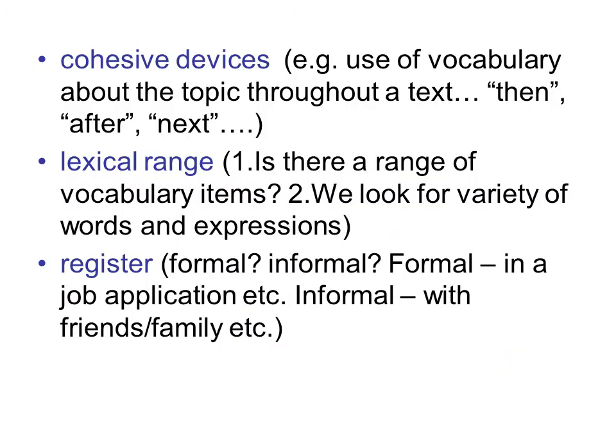The first one is cohesive devices. This is a feature in a text which joins text together. For example, use of vocabulary about the topic throughout the text, or of sequencing words — for example: then, next, after that — or of pronouns like he, him, or of conjunctions, for example: however, although.